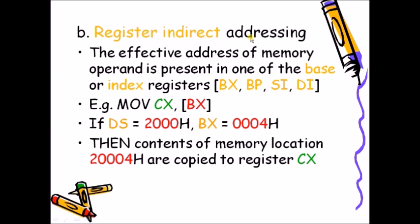In register indirect addressing mode, the effective address of the operand is present in one of the base or index registers: BX, BP, SI, or DI. When you place brackets around one of these registers, the value inside is treated as an address. For example, DS is added with BX to give the physical address 2 0 0 0 4, and the contents at that location are copied into CX.